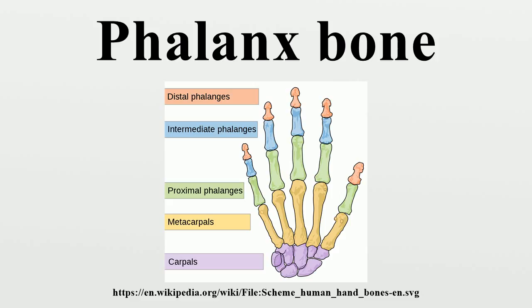Other mammals — ungulates: the forelimb is optimized for speed and endurance by a combination of length of stride and rapid step. The proximal forelimb segments are short with large muscles, while the distal segments are elongated with less musculature. In two of the major groups of ungulates — odd-toed and even-toed — what remain of the paws, the metacarpal and phalangeal bones, are elongated to the extent that they serve little use beyond locomotion.